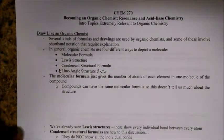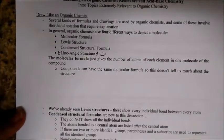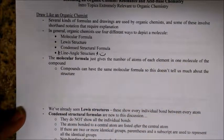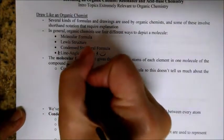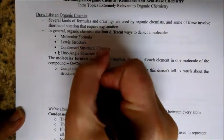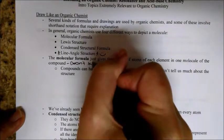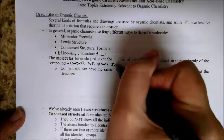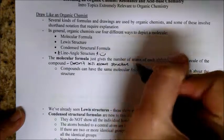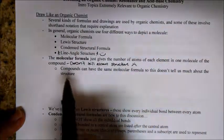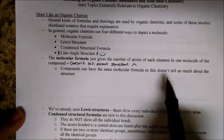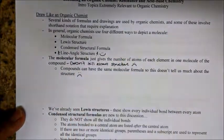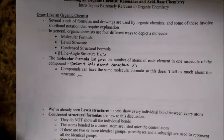First up, the molecular formula. It just gives the number of atoms of each element in the molecule of one compound. The downside of the molecular formula is it really doesn't tell you about structure. Compounds can have the same molecular formula, so it really doesn't tell us much.